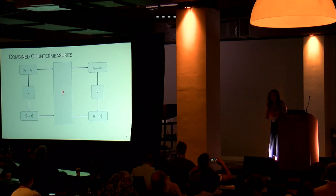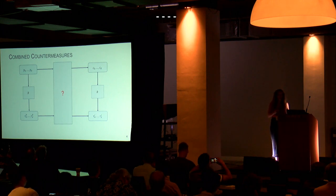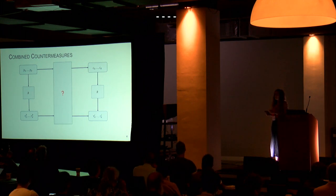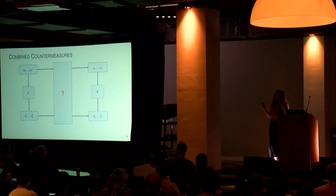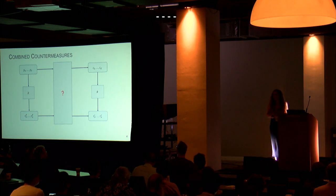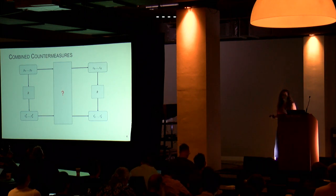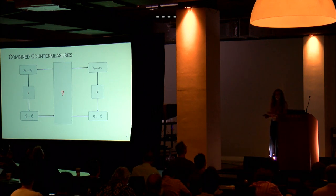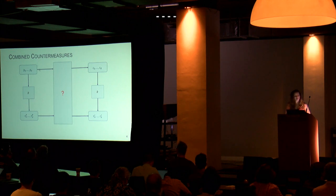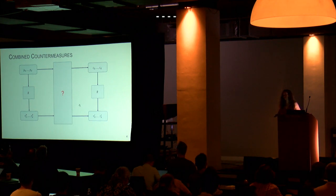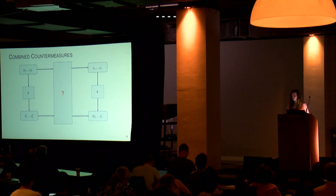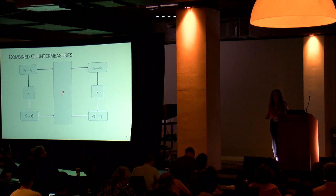Suppose that we have an adversary that can do side-channel analysis and fault attacks combined to make an even more devastating attack. We have to combine two countermeasures — masking with some redundancy. We have a masked plaintext, and the redundancy is also shared. We want to figure out how to implement, for example, AES in a way that we obtain a masked ciphertext, and also the redundancy of the ciphertext in shared form.